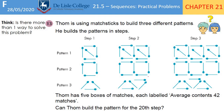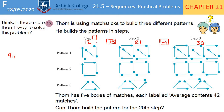We look at the whole combined pattern as one term. Counting the matchsticks: step 1 has 12, step 2 has 21, step 3 has 30. We're adding 9 each time, so we start with 9n. If n is 1, 9 times 1 is 9, but we want 12, so we add 3. The nth term rule is 9n + 3.